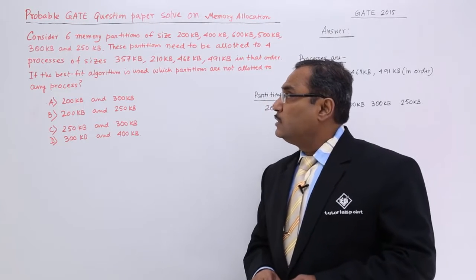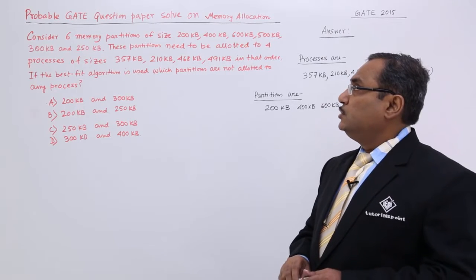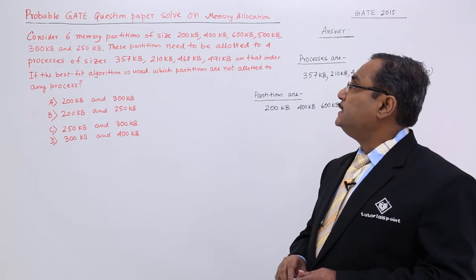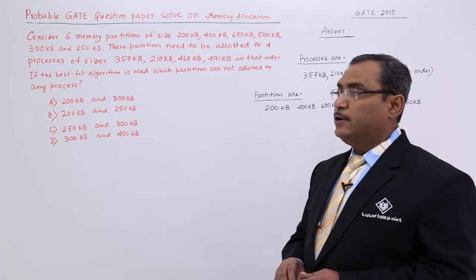Consider 6 memory partitions of size 200 KB, 400 KB, 600, 500, 300, and 250 KB.